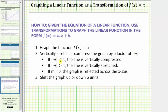If the absolute value of m is less than one, the line is vertically compressed. If the absolute value of m is greater than one, the line is vertically stretched. And if m is less than zero, the graph is reflected across the x-axis. And finally, we shift the graph up or down b units.